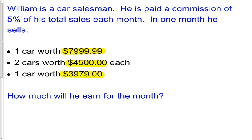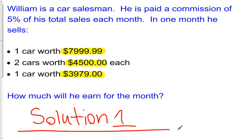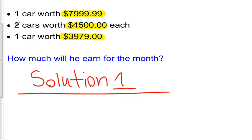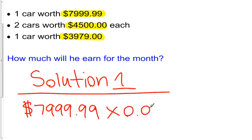So there are a couple of ways we can solve this problem. Solution one, let's call this one solution one. What I'm going to do is I'm going to calculate the 5% on each of these amounts here, each of these sales, or in this case double this one because we have two cars worth $4,500 each. So the first car that he sold, $7,999.99, he gets 5% of that as his commission. So we're going to multiply this by 0.05 to find out how much he makes on the sale of this car.